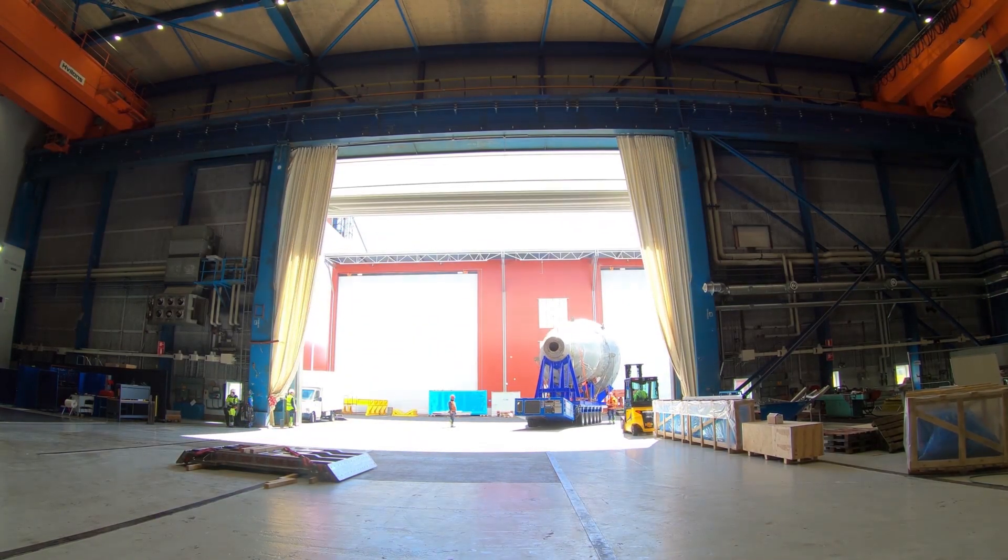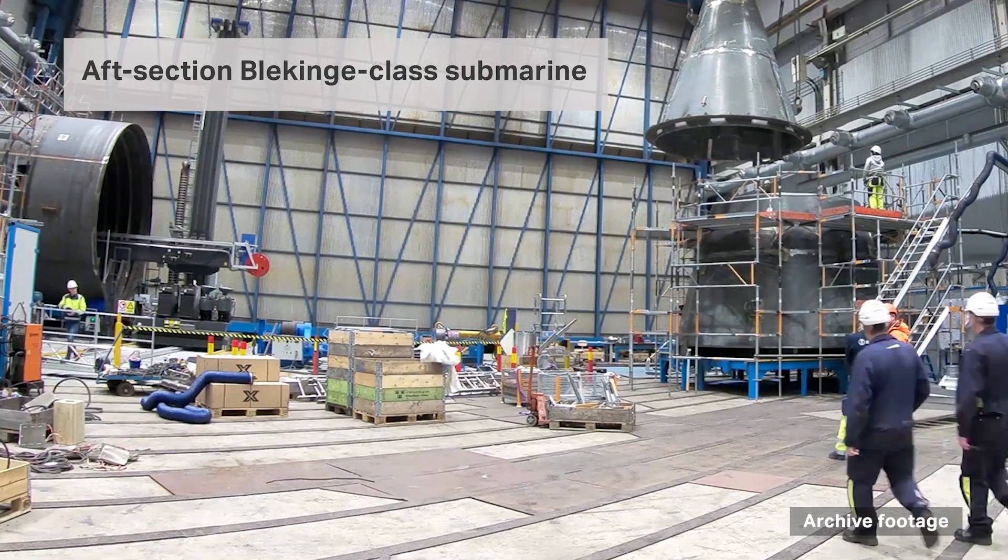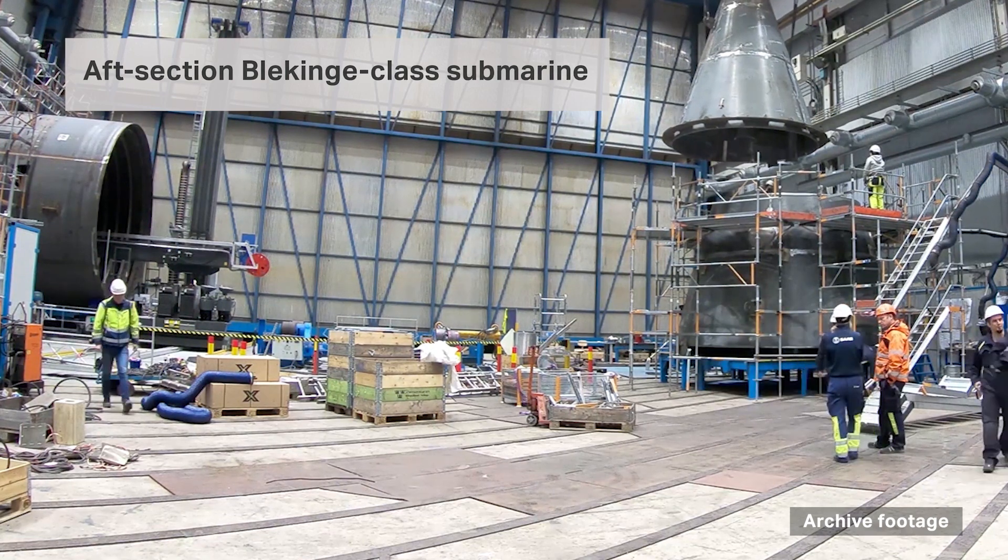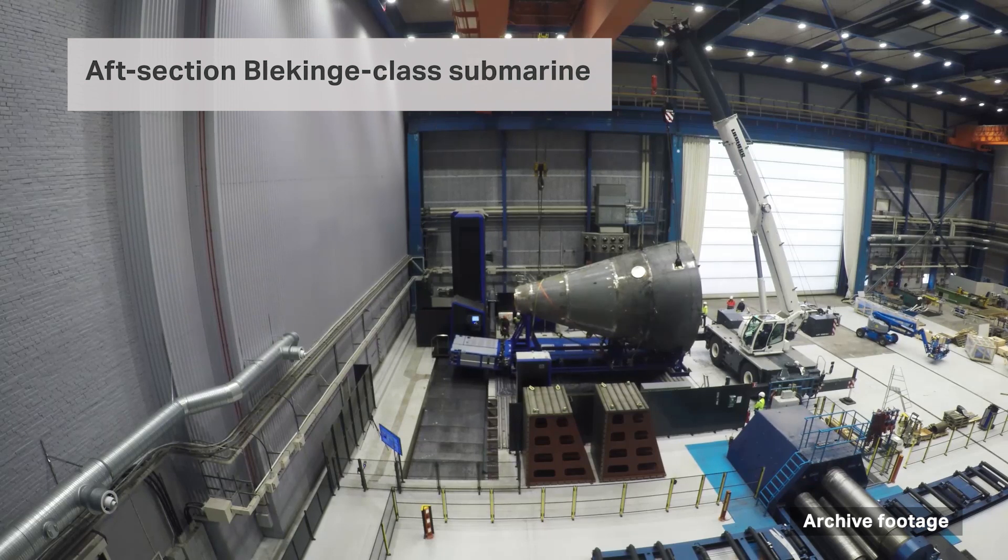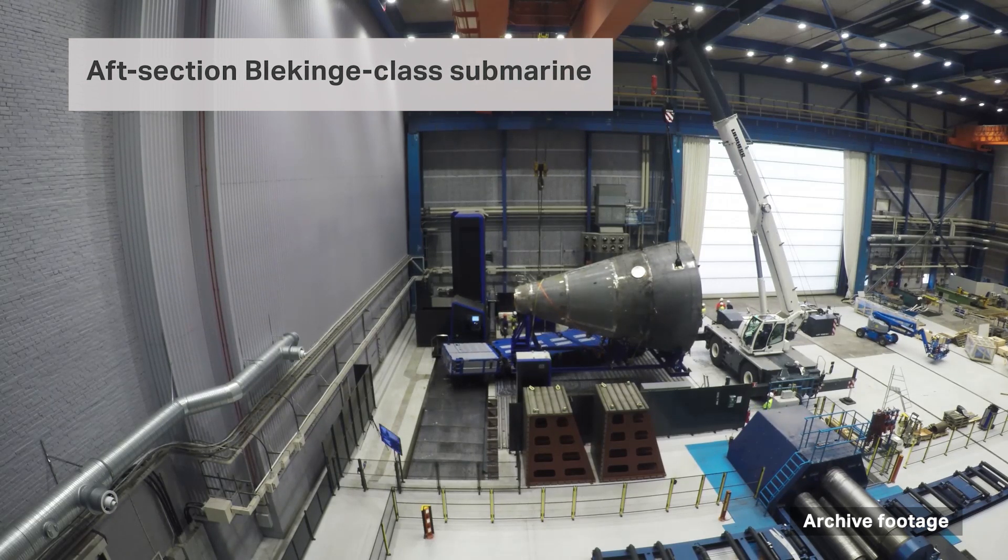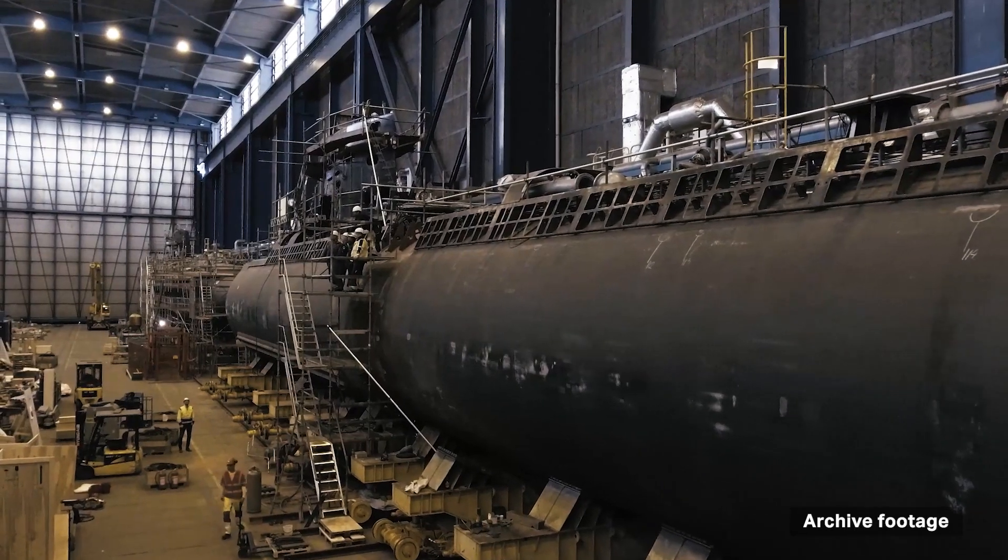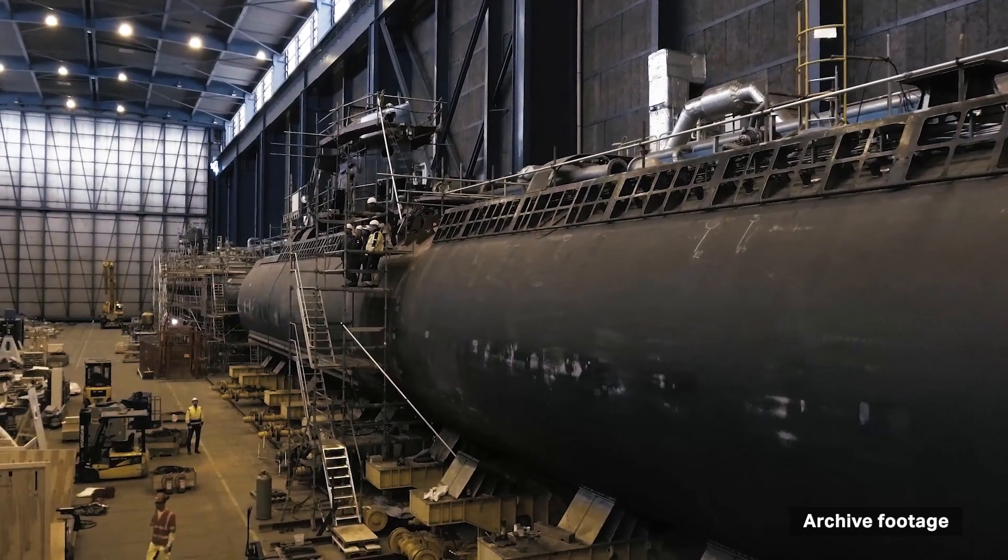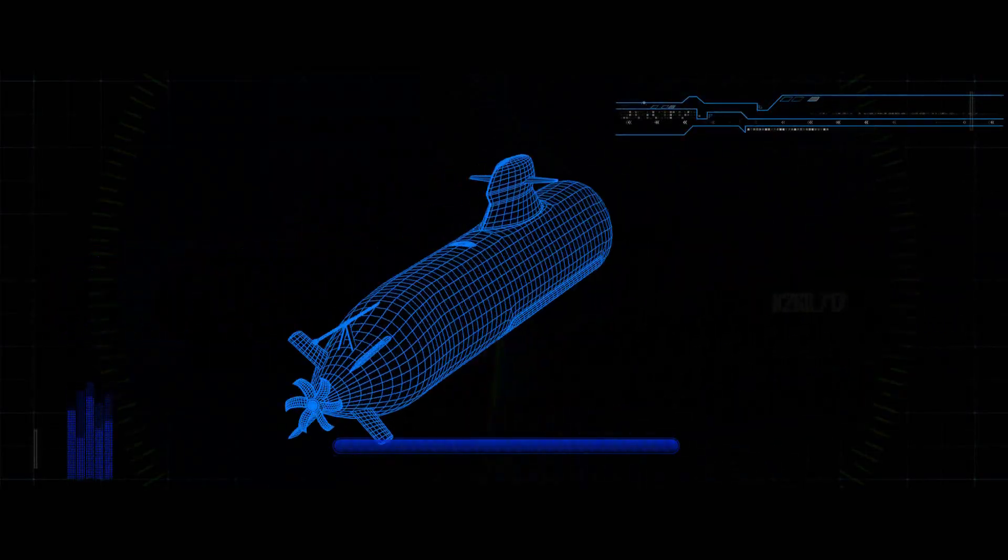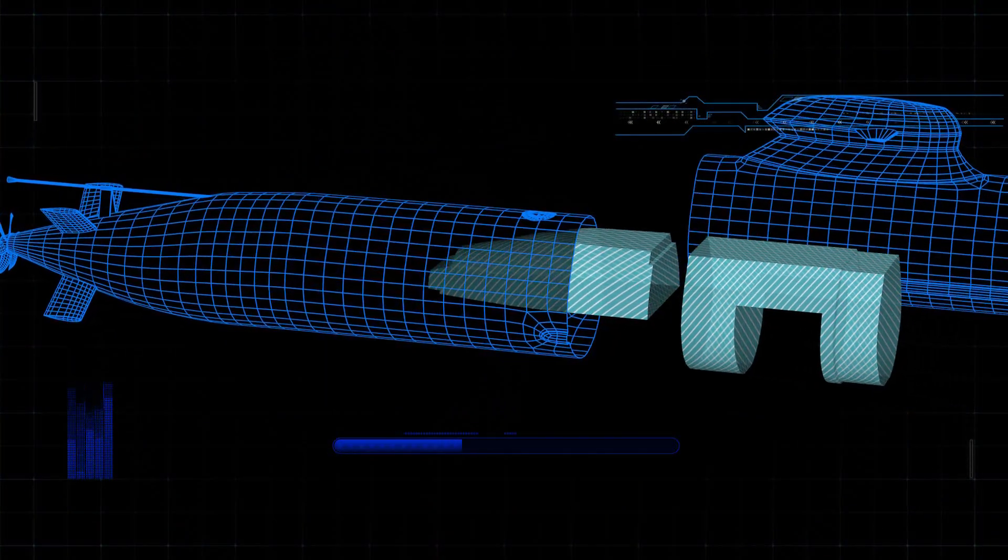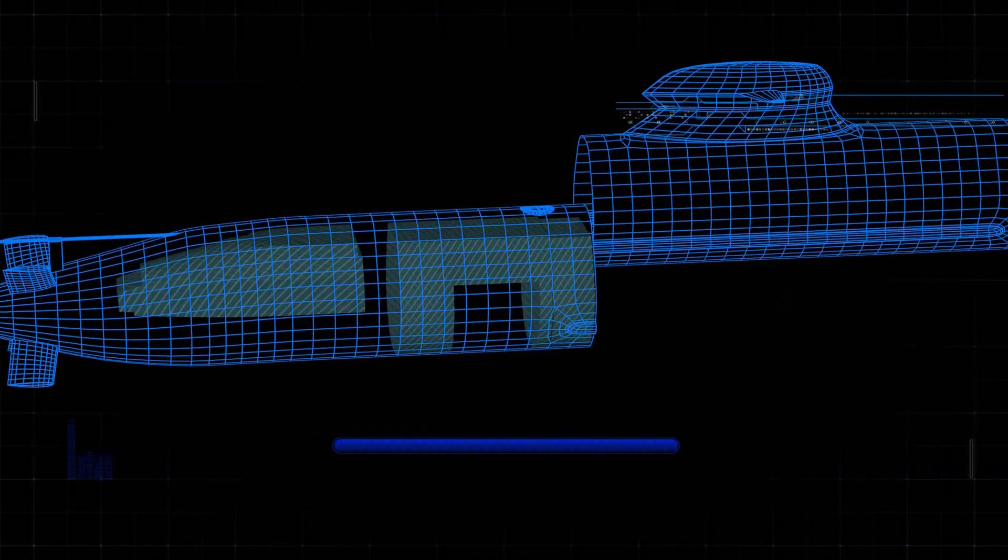Let's take a look at an example: the aft section of the new Blekinge-class submarine. It encompasses a large number of components and systems. The total weight of this section is more than 50 tons. The whole pressure hull measures approximately 6 meters in diameter. To fit in all the details, we are working with tolerances of fractions of a millimeter. All parts are made to measure based on our 3D design.